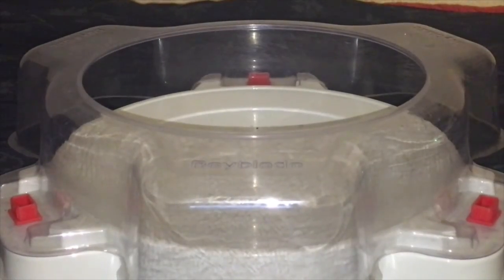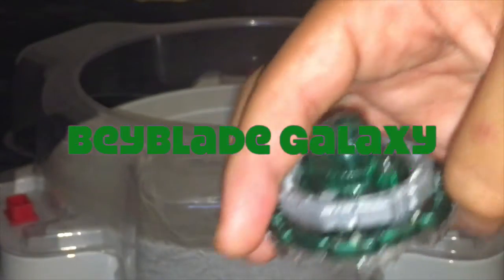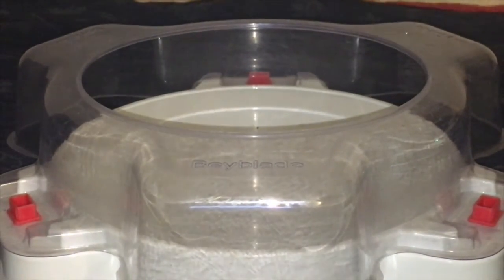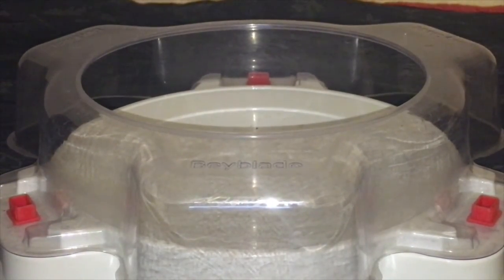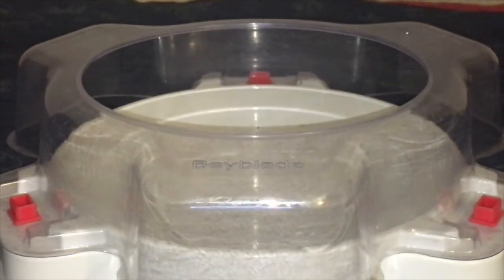For battle number 3, we have Beyblade Galaxy's combo, Kaiser Kerbeus Gravity Orbit, a very good defensive combo and stamina. Versus an attack combo from Burst Bros, Death Scyther Knuckle Unite, which is a good attack type. But who will win? Let's see.